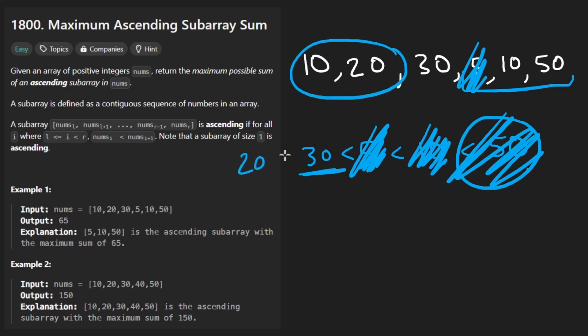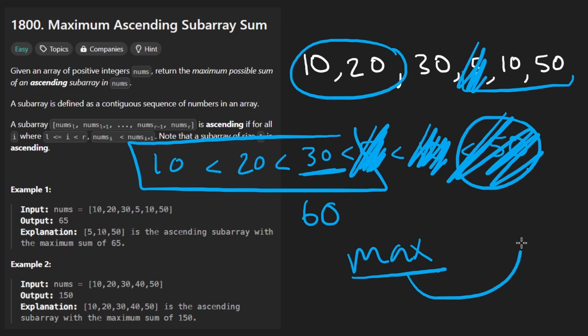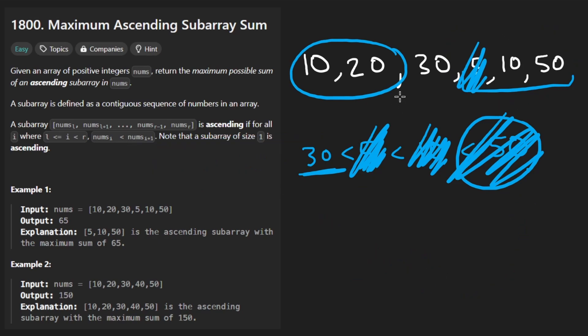Well, yes, 20 is less than 30 and then 10 is less than 20. So this is a valid subarray, but the sum is 60. It's not maximal. We found the maximum subarray sum with the other subarray. So how do you approach this problem?